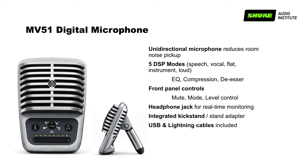The MV51's capacitive touch panel provides easy access to mic mute and headphone volume. You can cycle through DSP modes for different recordings. It features a large one-inch diaphragm studio condenser microphone and is built like a tank — all-metal construction, weighing about two pounds. It's a nice upgrade for a lot of applications beyond conferencing.